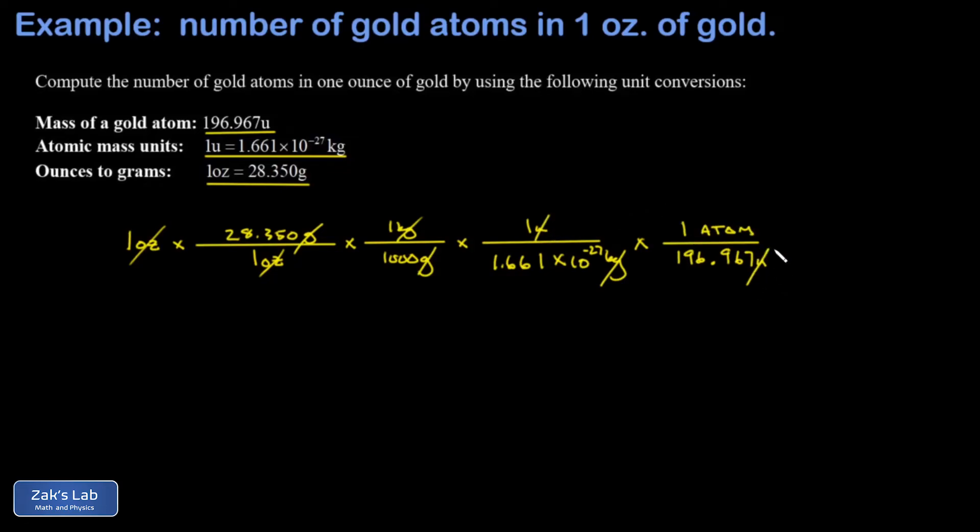The only survivor there is the number of atoms. So I multiply all the numbers in the numerators, divide by the product of all the numbers in the denominators, and I come out with a number of 8.67 times 10 to the 22nd atoms, and we're done.